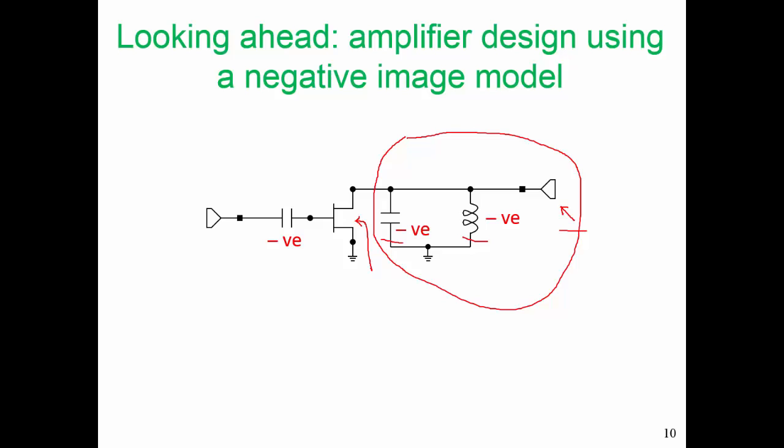It's going to be the same value as the output parallel resistance. And when we do design, we have to look at the input and output matching networks together. And we need to trade off the characteristics that we're going to get by adjusting the input matching network and adjusting the output matching network. We cannot just do one on their own.